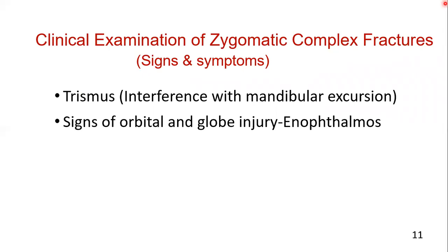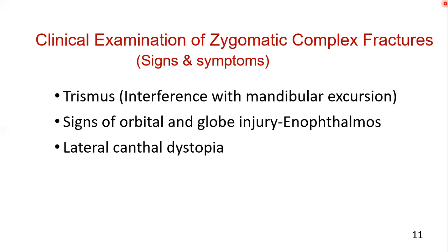Next is enophthalmos, seen in some fractures of the zygomatic complex. Lateral canthal dystopia means the downward movement of the outer corner or lateral corner of the eye. We will discuss this further in the video on the clinical features of the maxillary fractures.